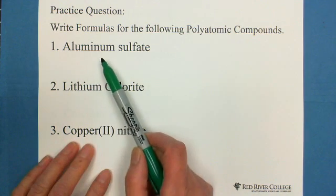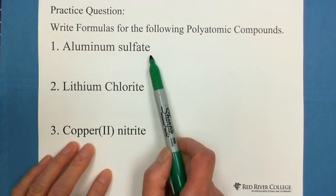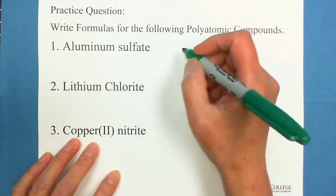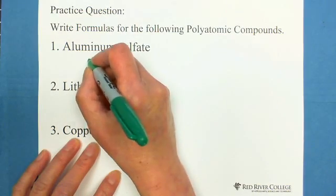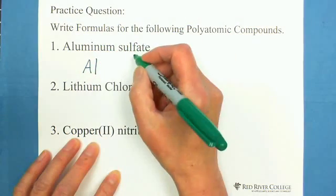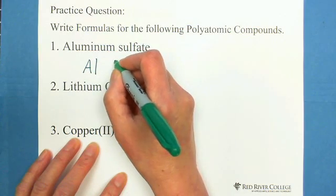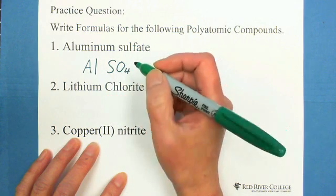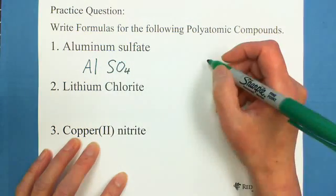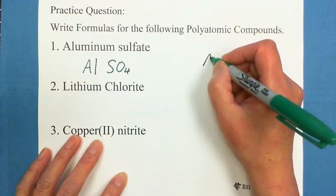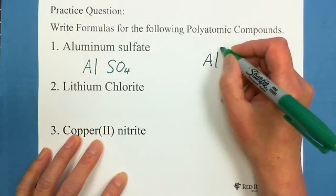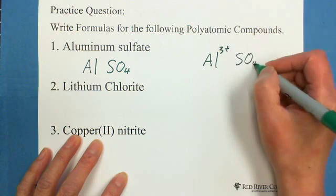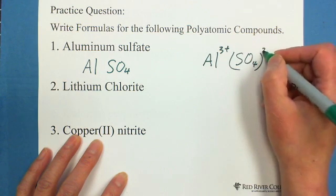First one is aluminum sulfate. We write symbols. Aluminum is Al, and sulfate is SO4. After writing this, we need to label the charges. The aluminum is 3 positive. The sulfate is 2 negative.